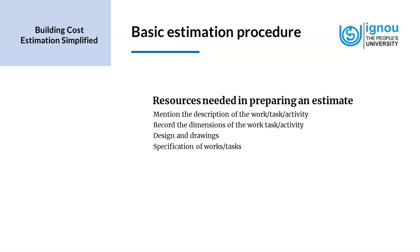Specification of works and tasks provides more detailed information than drawings alone. It gives detail aspects like dimensions, construction material used, construction technology to be used, and the quality of work needed for constructing that project. We also need detailed quantities of the task, which are put into the estimate in the format given for estimation.